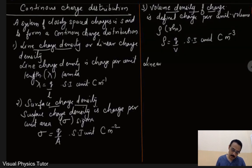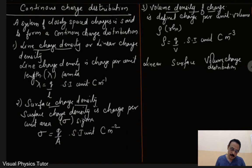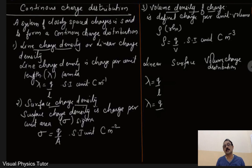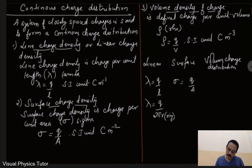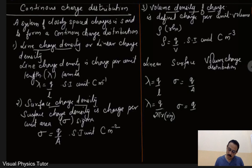Now let's apply these formulas to specific geometries. For linear charge distribution: lambda equals Q divided by L. For a ring, lambda equals Q divided by 2πr, since the circumference of a ring is 2πr. For surface charge density: sigma equals Q divided by A. For a sphere, sigma equals Q divided by 4πr², since the surface area of a sphere is 4πr².